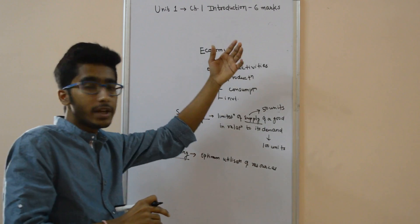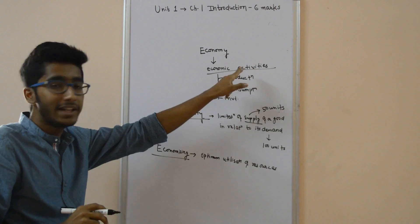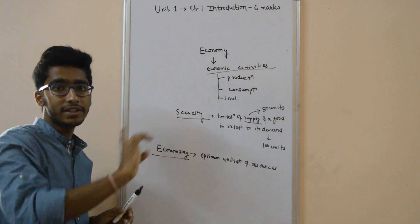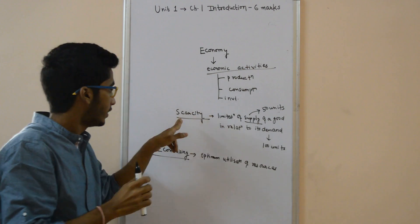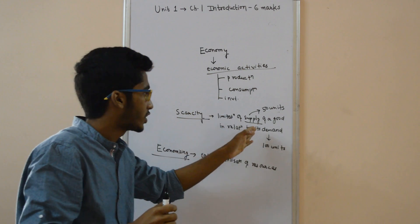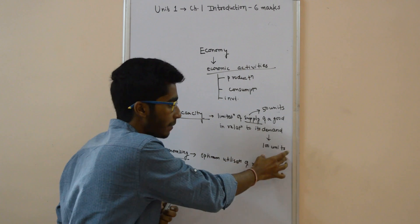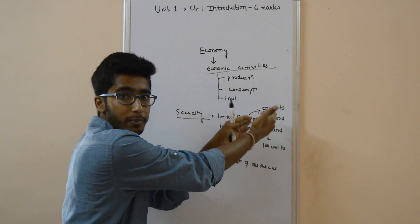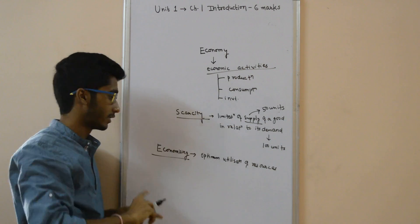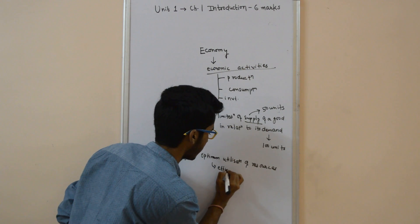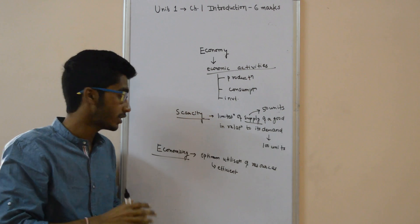To recap: we discussed the term economy with the help of economic activities — anything which helps in generating income legally, like production, consumption, and investment. Next, scarcity is the reason for which we study economics — limitation of supply of a good in relation to its demand. Then economizing means optimum utilization of resources — efficient and effective use of resources so the problem of scarcity can be dealt with and resources are not wasted.